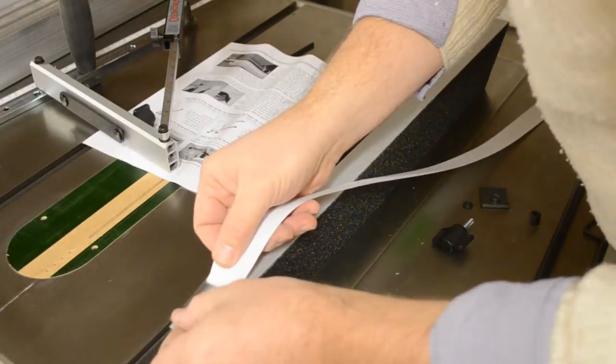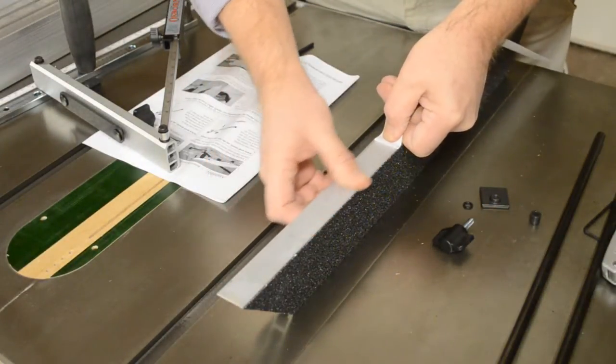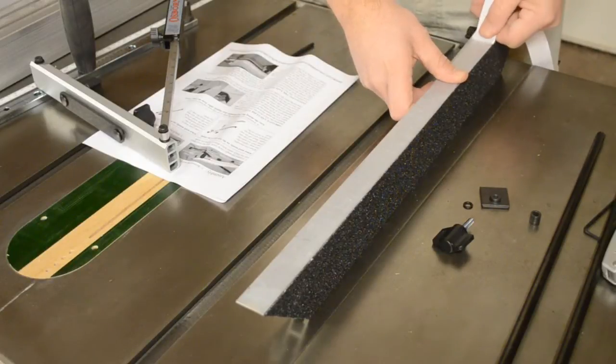Apply the glide tape to the bottom of your fence to reduce friction and ensure that your miter guide slides freely across your table saw.